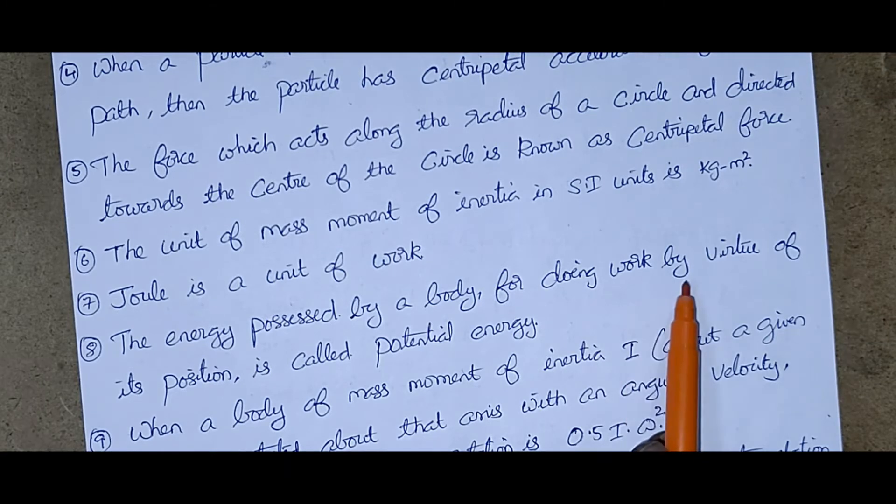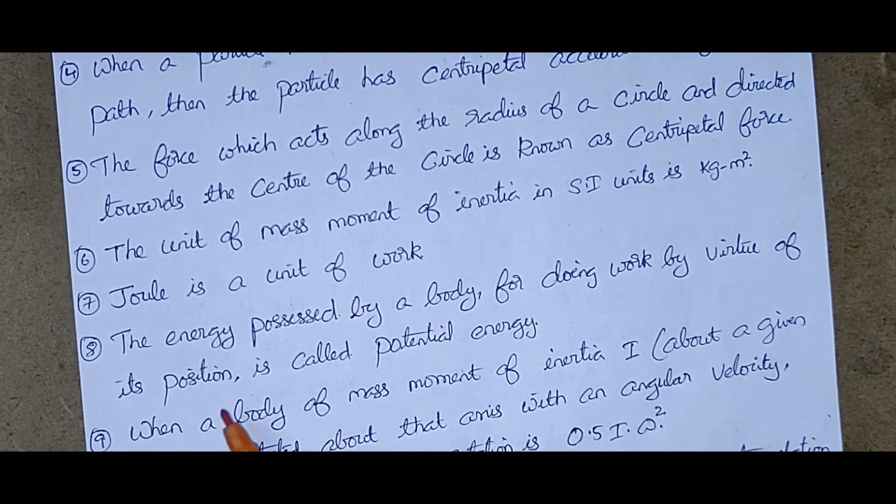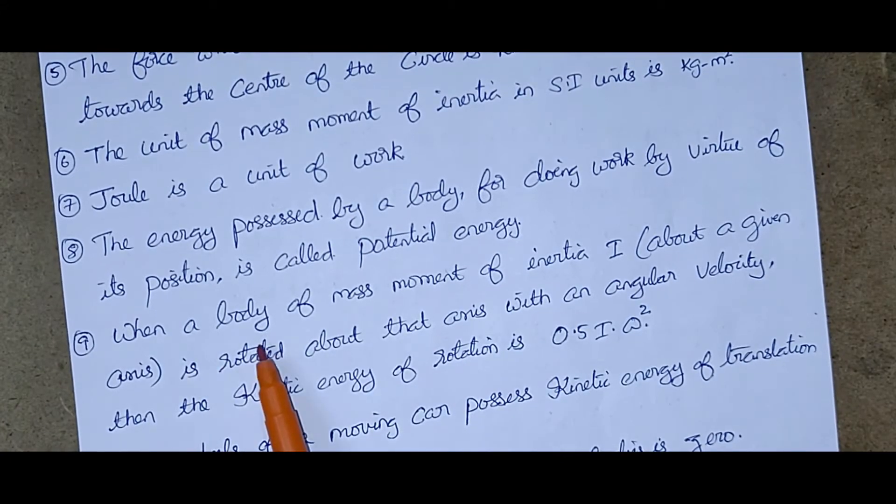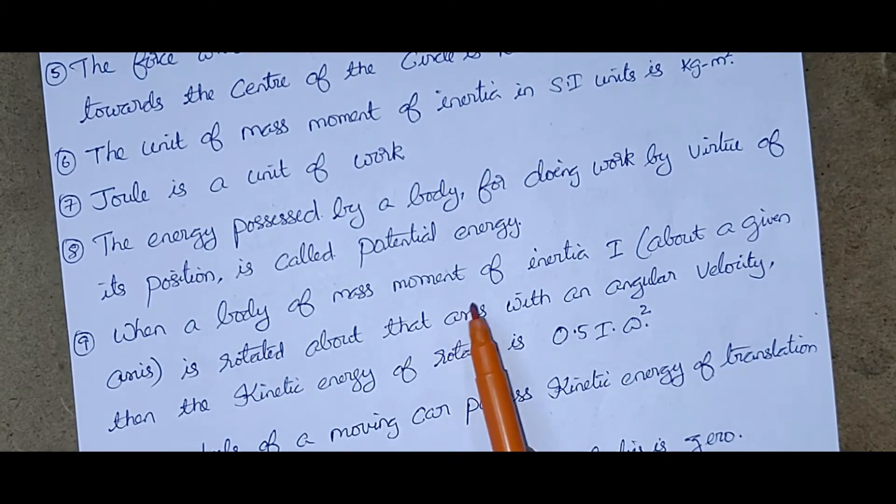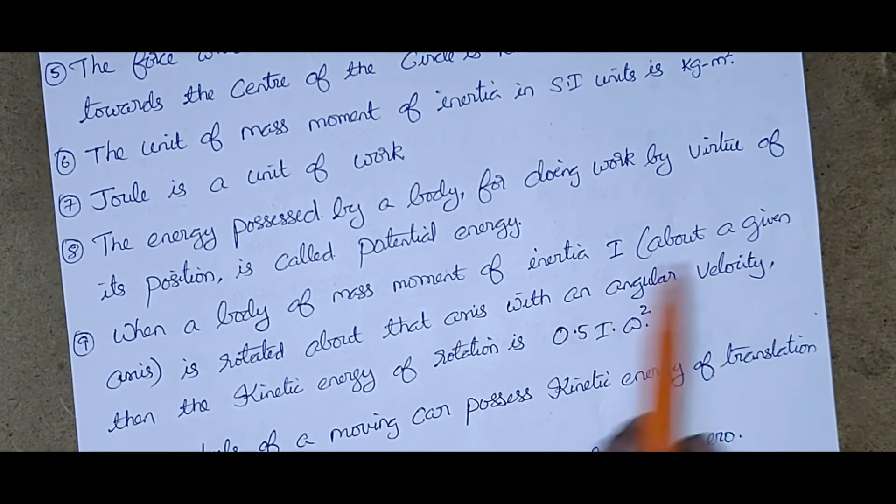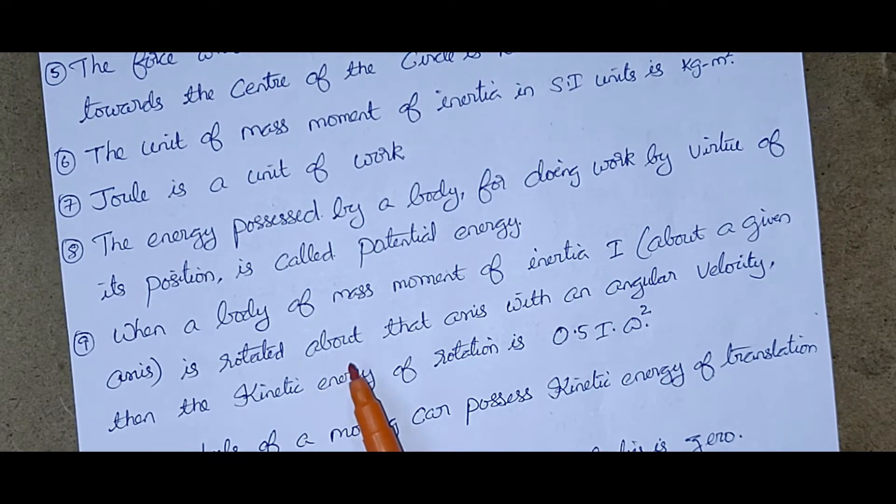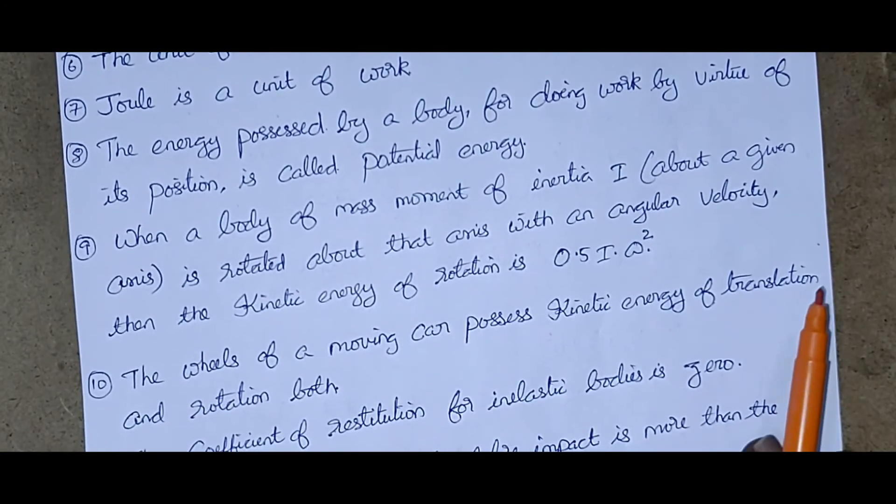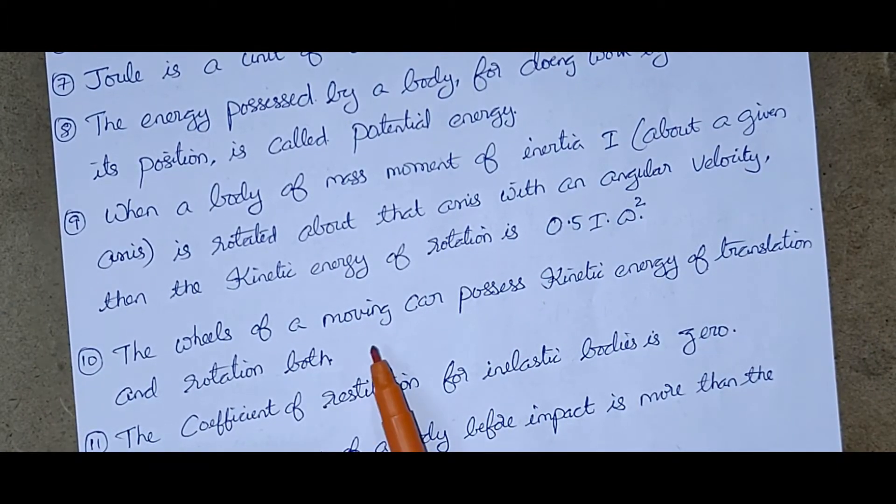The energy possessed by a body for doing work by virtue of its position is called potential energy. When a body of mass moment of inertia I about a given axis is rotated about that axis with an angular velocity, then the kinetic energy of rotation is 0.5 I into omega square.